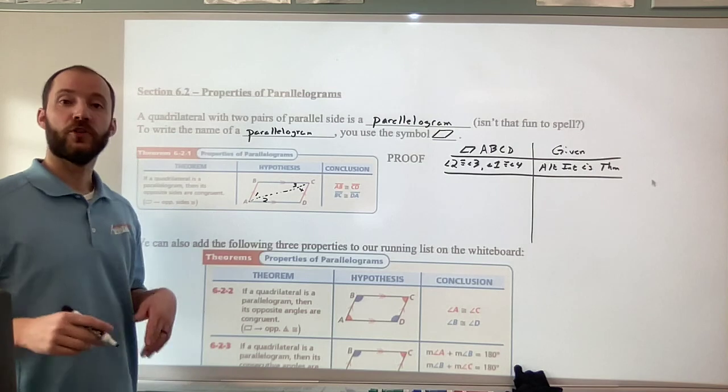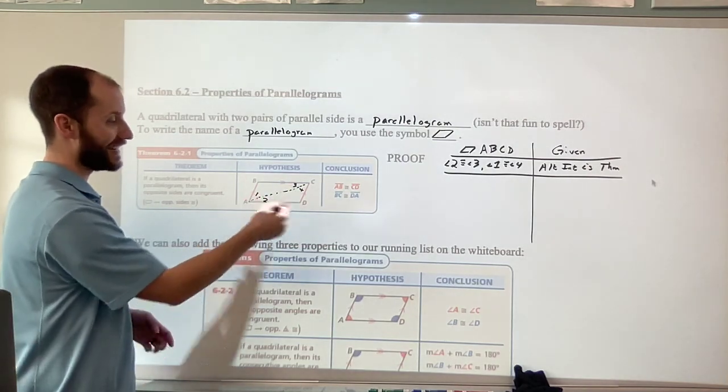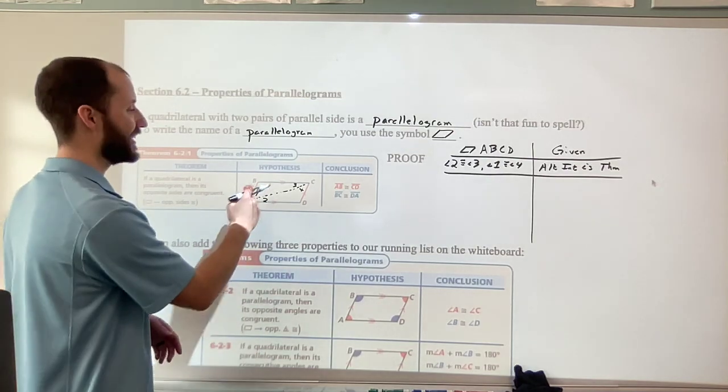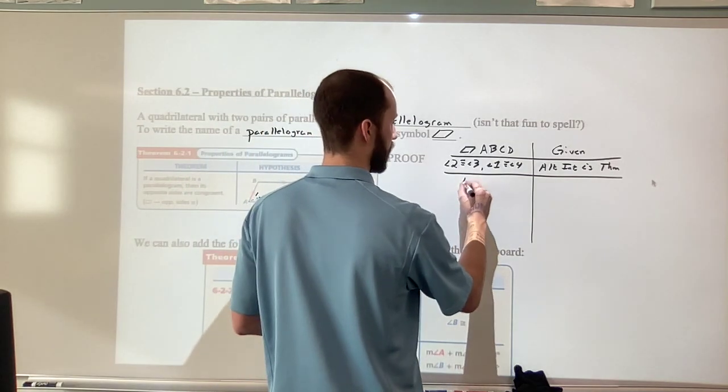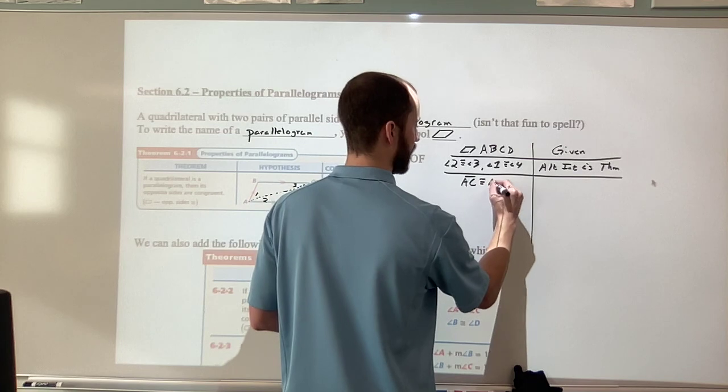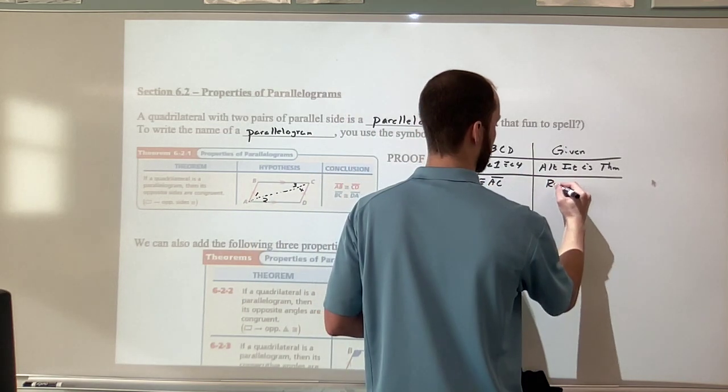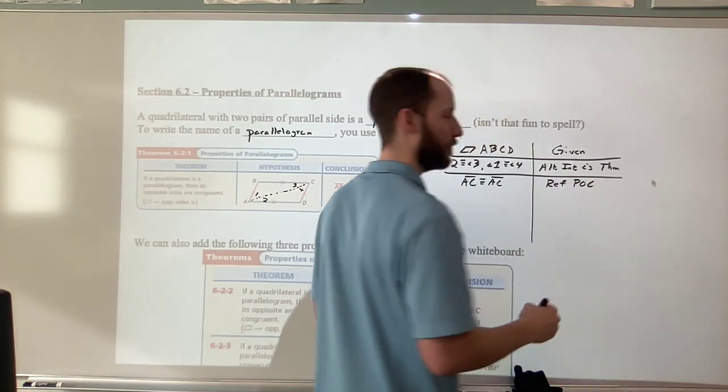We also have two triangles, triangle ABC, triangle ADC, so those triangles have side AC in common. So by the reflexive property, AC is congruent to itself, that's by the reflexive property of congruency or POC.